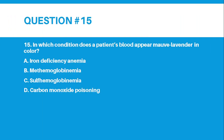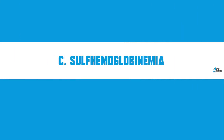Number 15: In which condition does a patient's blood appear mauve-lavender in color? Letter A, Iron Deficiency Anemia. Letter B, Methemoglobinemia. Letter C, Sulfhemoglobinemia. Letter D, Carbon Monoxide Poisoning. The correct answer for number 15 is Letter C, Sulfhemoglobinemia.